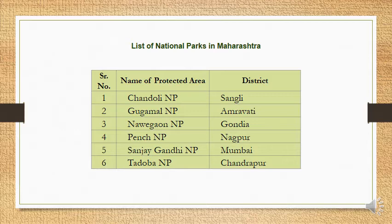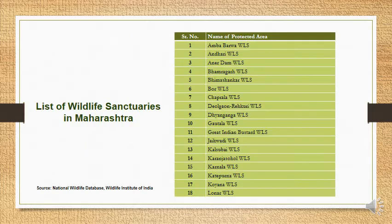These are the National Parks located in Maharashtra: Chandoli National Park, located in Sangli District; Gugamal National Park, located in Amravati District; Navegaon National Park, located in Gondia District; Pench National Park, located in Nagpur District; Sanjay Gandhi National Park, located in Mumbai District; and Tadoba National Park, located in Chandrapur. There are around 36 sanctuaries in Maharashtra as per the Wildlife Institute of India, Dehradun. You can pause the presentation and have a look.